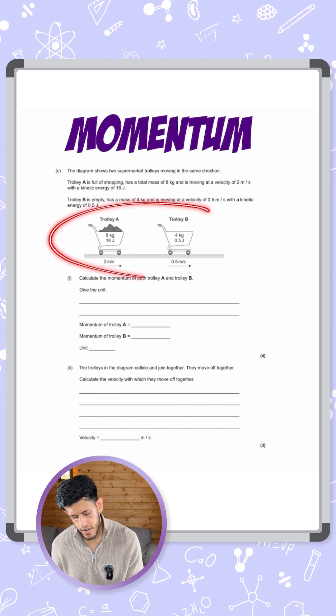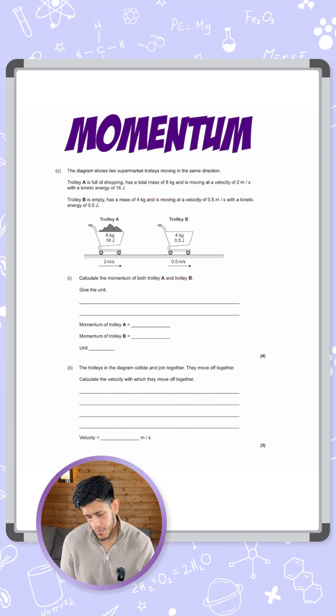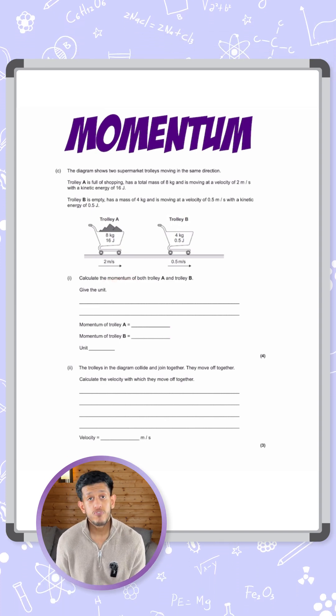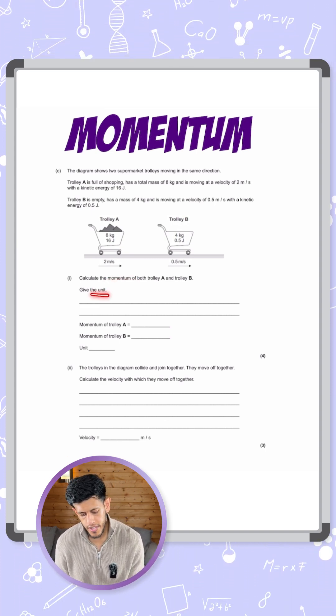All of that is captured in the diagram so we're okay there. We can follow it all from the diagram and now it says calculate the momentum of both trolley A and trolley B and give the units.